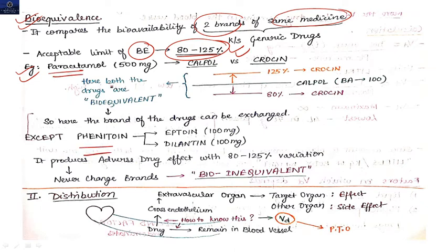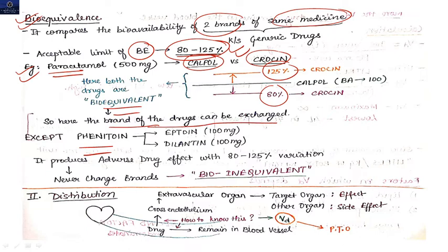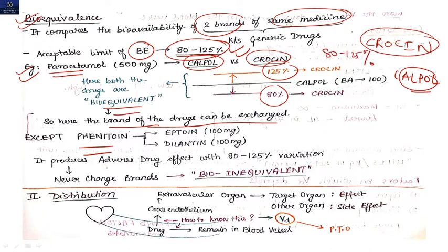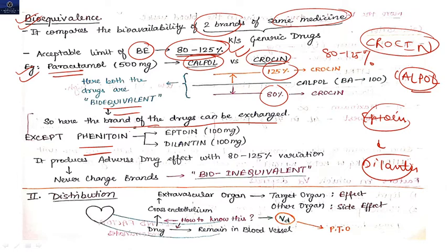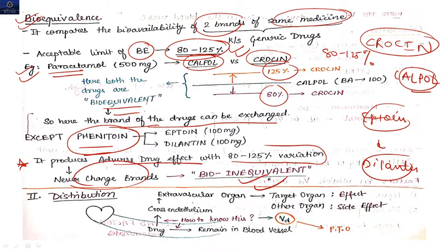Let's take two examples: paracetamol and phenytoin. For paracetamol, suppose there are two brands — Calpol and Crocin. When we compare their bioequivalence, they fall within the 80% to 125% limit, so these drugs are bioequivalent and the brands can be exchanged. However, for phenytoin — brands like Eptoin and Dilantin — the bioequivalence is different and falls outside this range, so you must not change brands. Remember: paracetamol brands are bioequivalent; phenytoin brands are not.